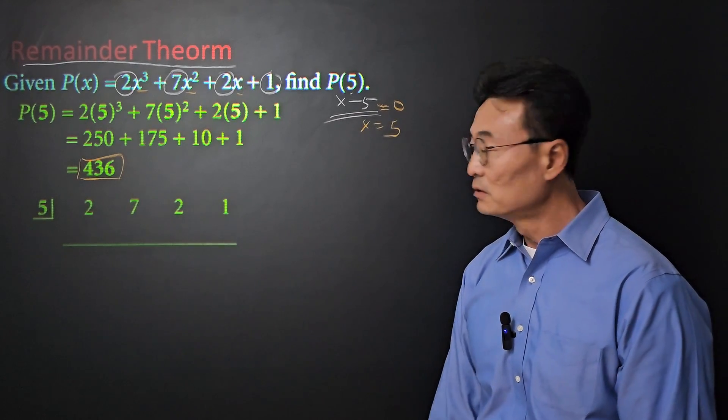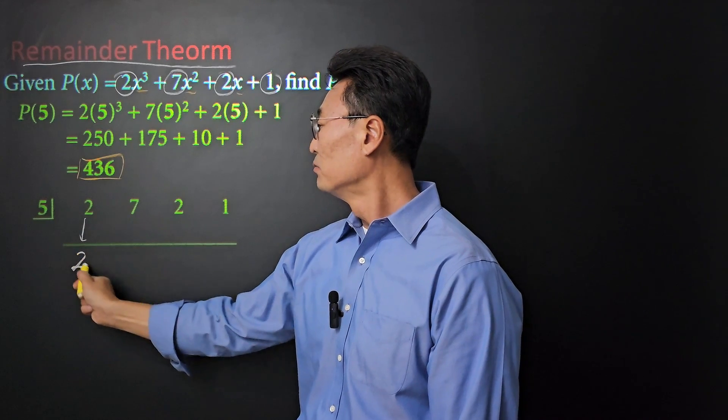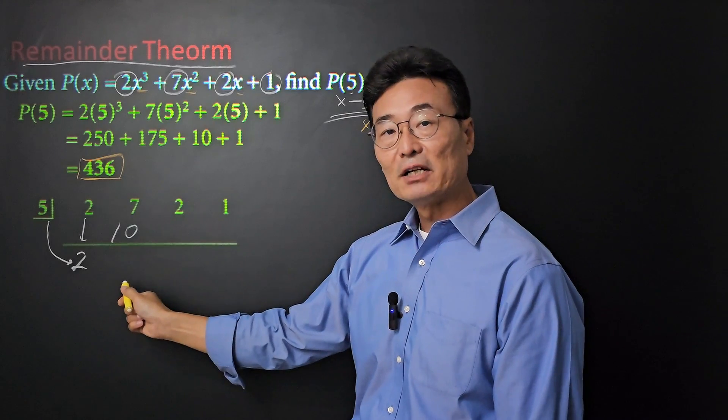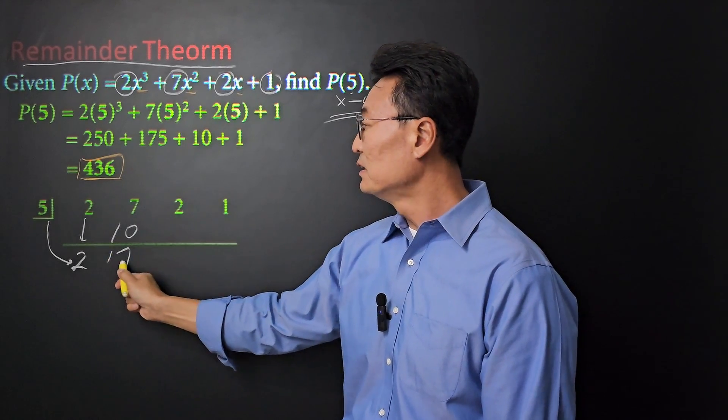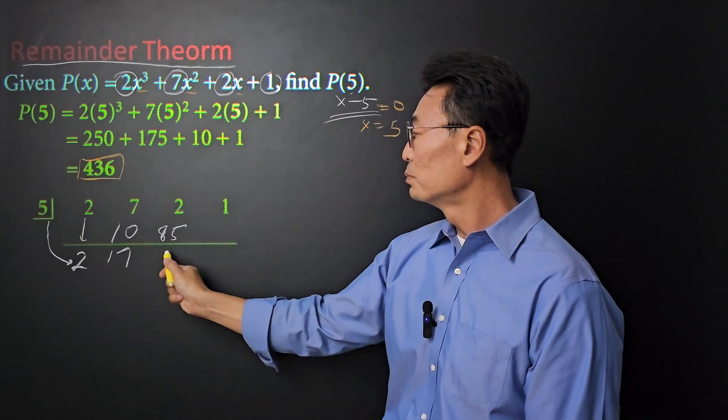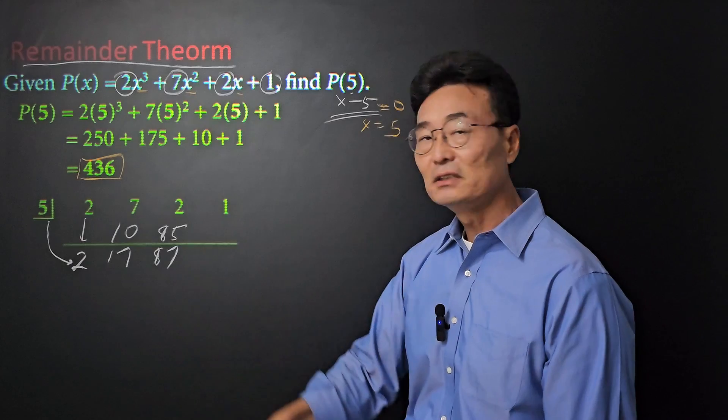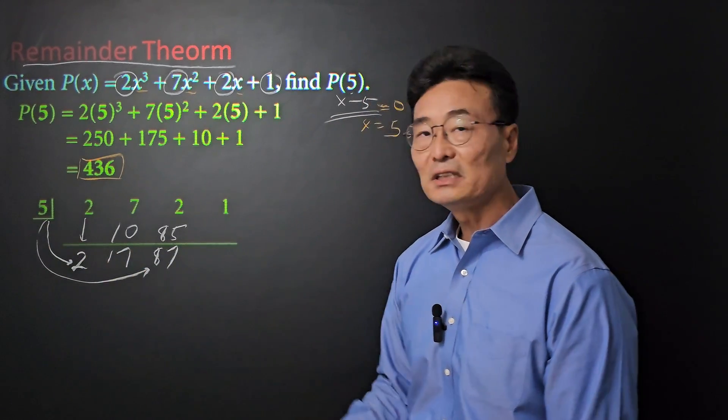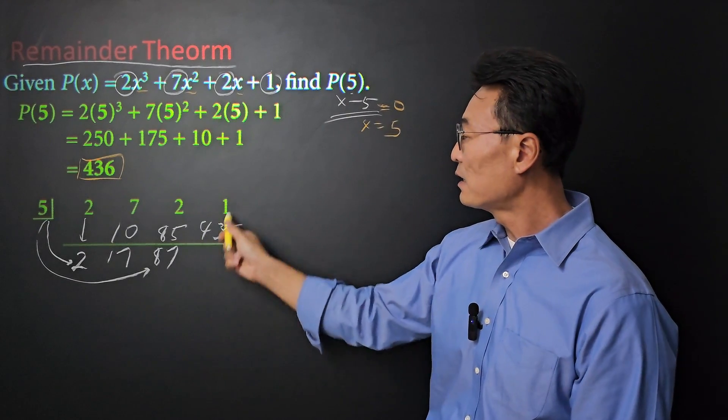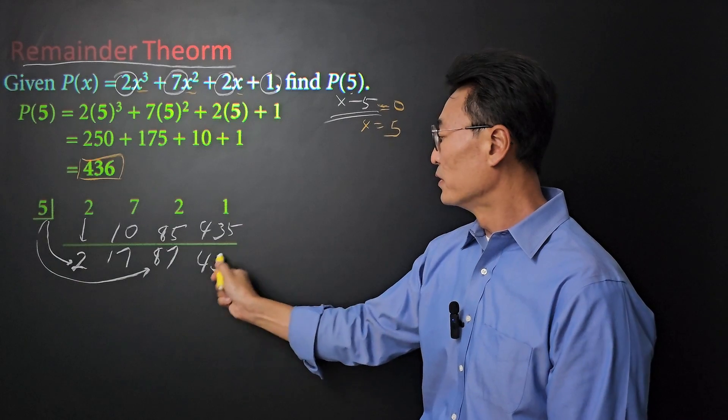Let's go ahead and finish this up. 2 comes down. 5 times 2 is 10. Add it up, we get 17. 5 times 17 is 85. 2 plus 85 is 87. And 5 times 87 is going to be 435. And add it up and down, we get a 436. And that is our remainder.